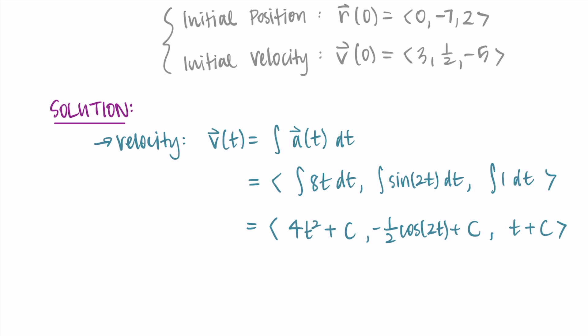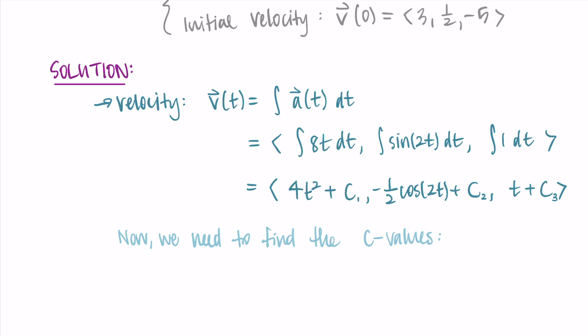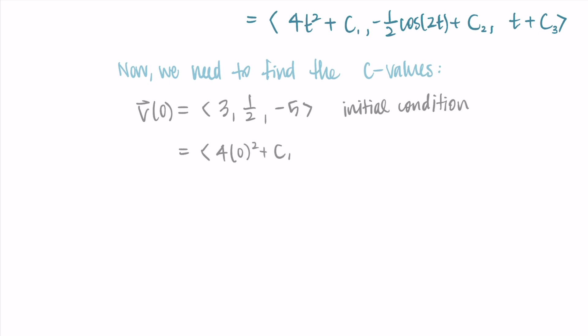We found the velocity vector, but now we need to find the constants of integration — that's the part that takes a bit more work. These constants are most likely different, so I'll label them c₁, c₂, and c₃. We use the initial conditions to find them. We were told the initial velocity v(0) = ⟨3, 1/2, -5⟩, and we now have a formula for velocity, so we substitute t = 0 into the formula and set it equal to that vector.